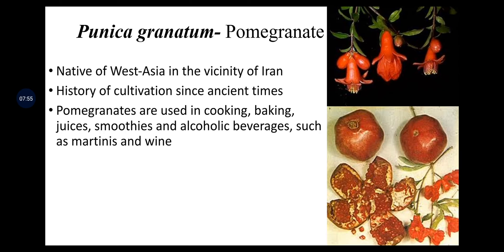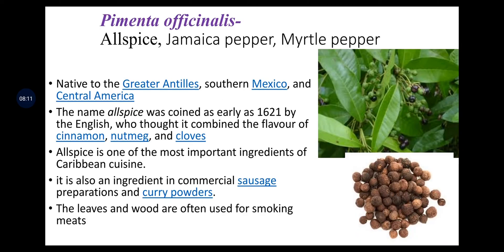Punica granatum is pomegranate, native to West Asia in the vicinity of Iran, with a history of cultivation since ancient times. Pomegranates are used in cooking, baking, juices, smoothies, and alcoholic beverages such as martinis and wine. Pimenta officinalis is allspice, also known as Jamaica pepper or myrtle pepper, native to the Greater Antilles, southern Mexico, and Central America. The name allspice was coined in 1621 by the English, who thought it combined the flavors of cinnamon, nutmeg, and clove. Allspice is one of the most important ingredients of Caribbean cuisine, also an ingredient of commercial sausage preparations and curry powders, and the leaves and wood are often used for smoking meats.